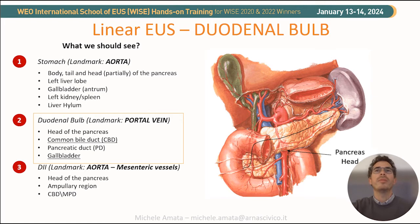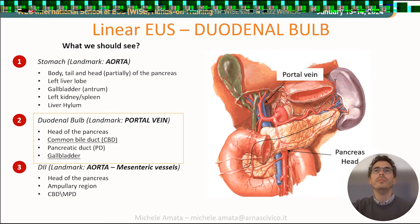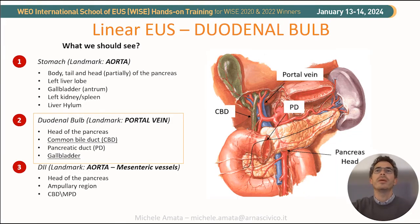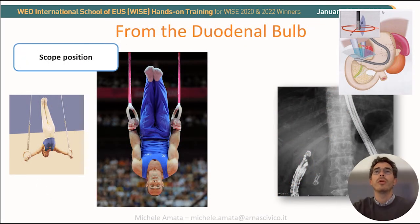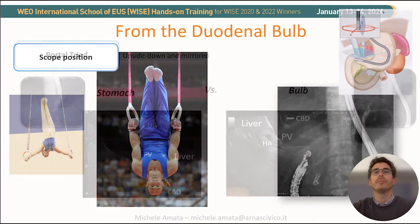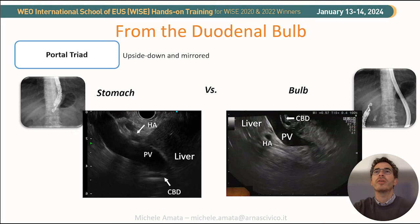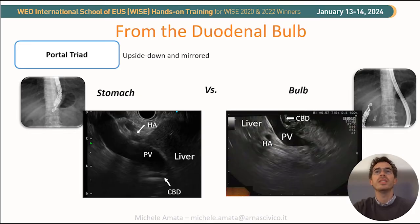From the duodenal bulb, the main landmark is the portal vein. We will also trace the CBD, the MPD, and a small portion of the gallbladder. As you can see in the fluoroscopic picture, the scope long position leads us to inspect the biliopancreatic structure from below — it can be compared to the position of a ring gymnast. As a result, the hilar structures are upside down and mirrored. For example, viewing the hepatic hilum from the bulb compared to the stomach: from the stomach, the liver is on the bottom right, the hepatic artery is closer to the transducer, and the CBD is distal. From the bulb, images are upside down and mirrored, with the liver on the upper left, CBD closer to the transducer, and the hepatic artery more distal.